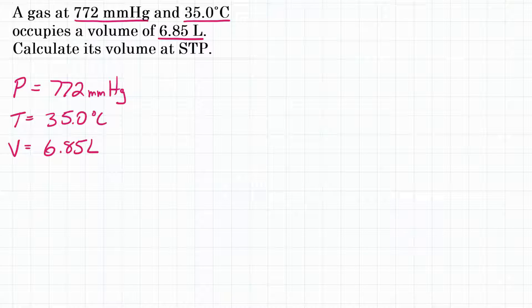The question is asking for the volume at STP. STP stands for Standard Temperature and Pressure, which means 0 degrees Celsius or 273 Kelvin, and 1 atmosphere or 760 millimeters of mercury. So that's everything the problem gave us.